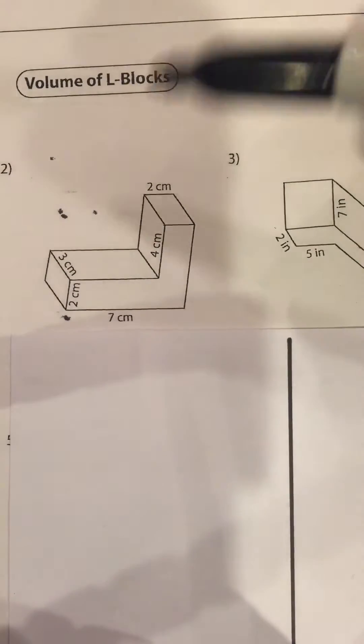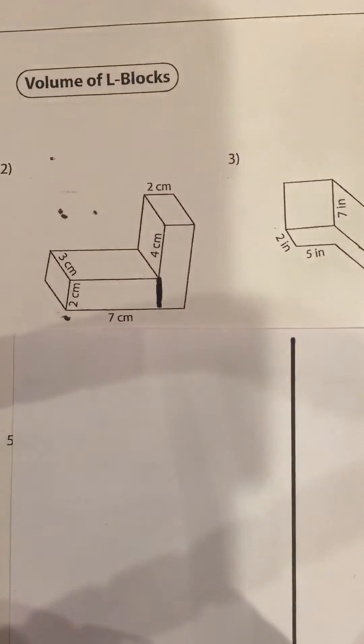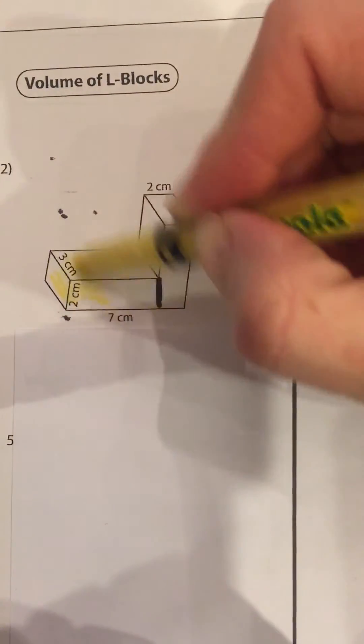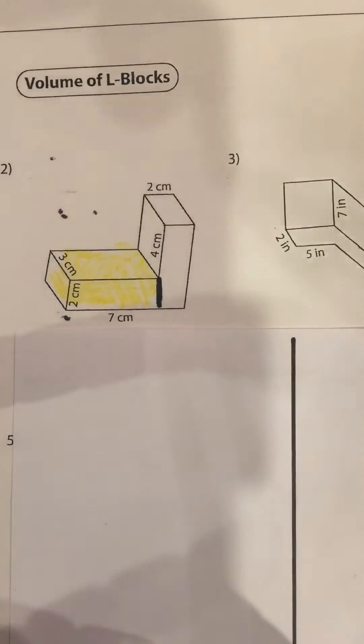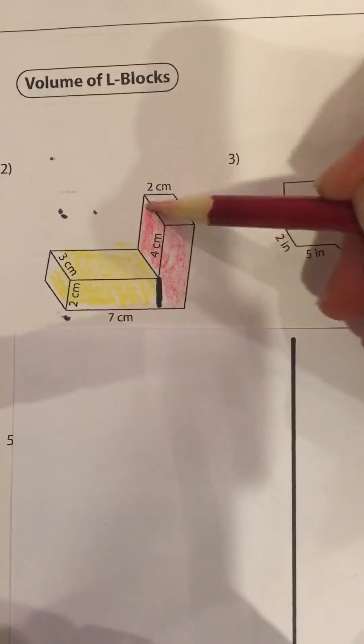All right, let's go on and do number two together. Okay, I'm going to divide this, this looks like the natural place to do it. And again I'm going to shade both of my new rectangular prisms two different colors.